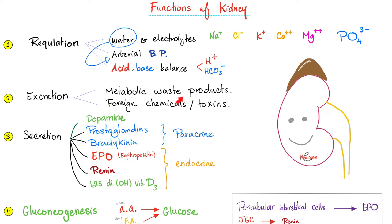As you can imagine, in chronic kidney disease the kidney is unable to maintain your water balance and acid-base balance, so you tend to develop acidosis. Moreover, this poor kidney will not be able to secrete EPO, and you will develop anemia because your bone marrow is not making enough red blood cells thanks to the lack of EPO.